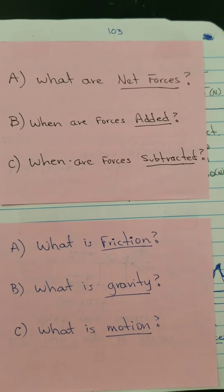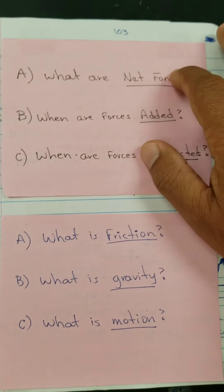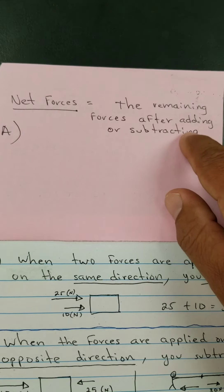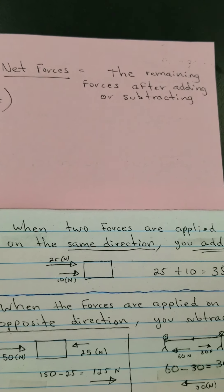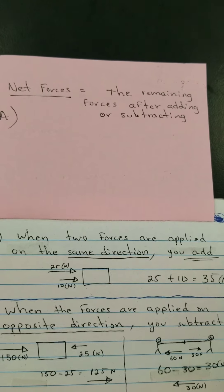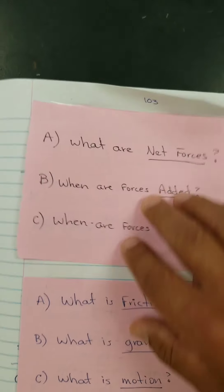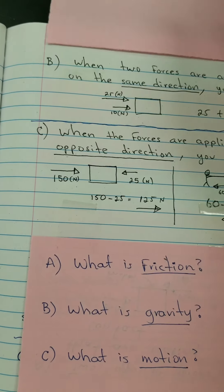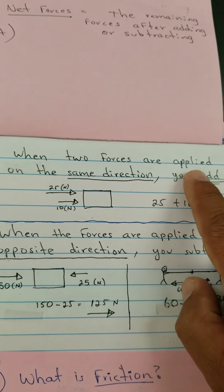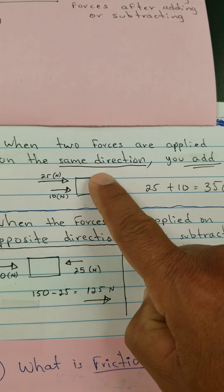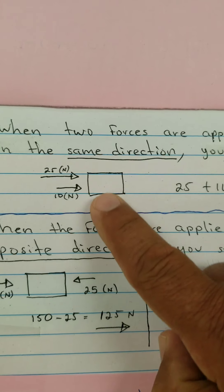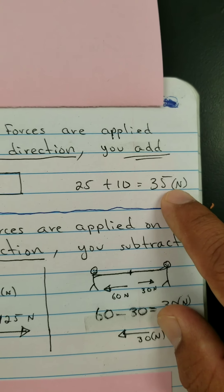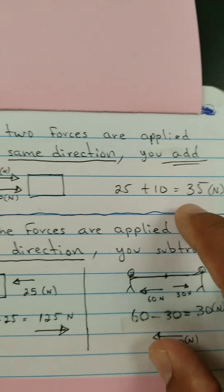At the end we have page 103. Letter A: what are net forces? Net force is what you have left over after you add or subtract all the forces being used. Letter B: when do you add forces? You add forces when they are going in the same direction. For example, 25 Newtons and 10 Newtons both pushing an object in the same direction gives you a total of 35 Newtons going to the right.